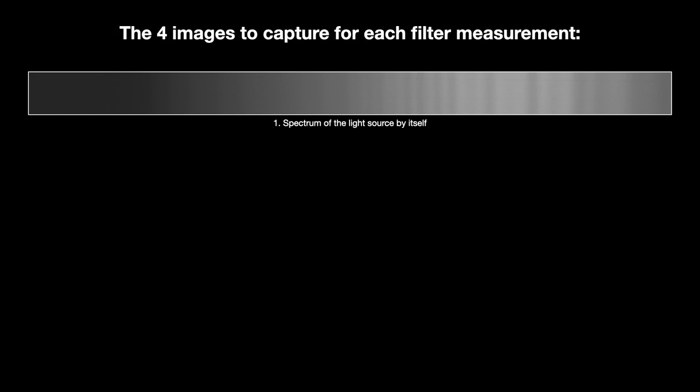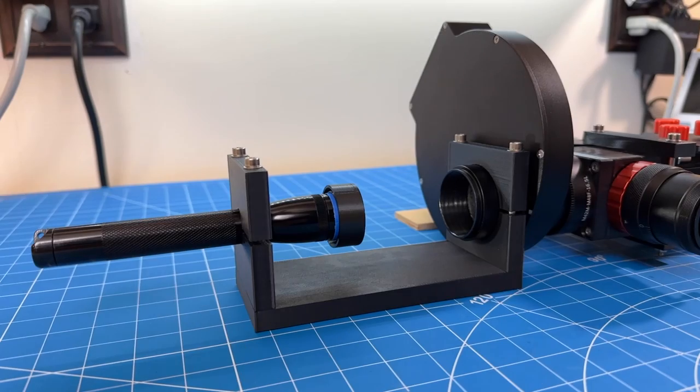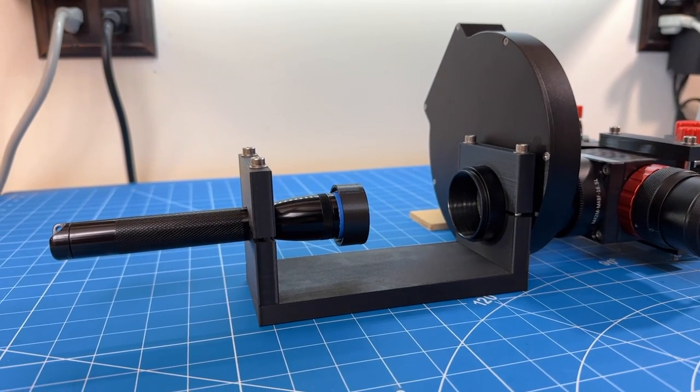Now let's talk about the testing procedure. In order to test a filter, I have to acquire four images. The first image is the spectrum of a source of white light without any filter in front of it. For that, I use a flashlight equipped with a tungsten bulb.